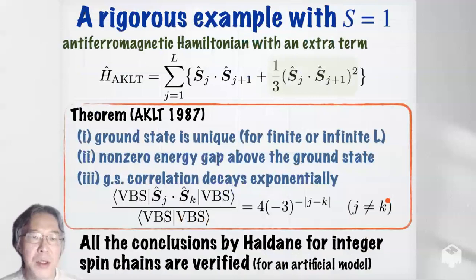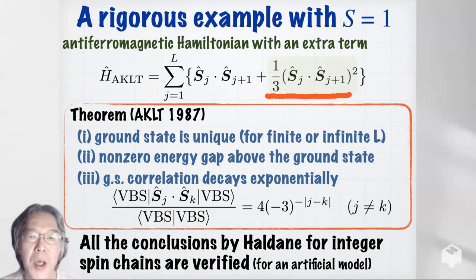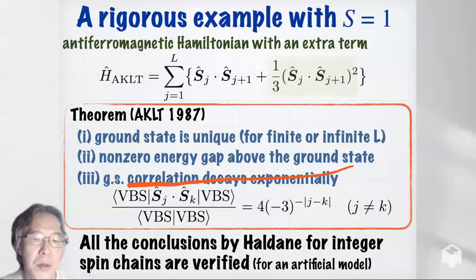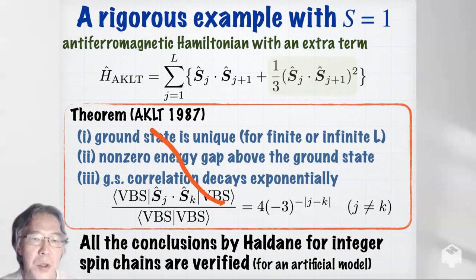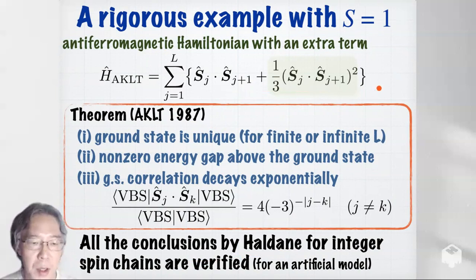One of such evidences is a rigorous example for the spin-1 chain: consider the antiferromagnetic Heisenberg Hamiltonian with an extra term. For this model, called the AKLT model, it was proved that the ground state is unique, there is a non-zero energy gap above the ground state energy, and the ground state correlation decays exponentially. So all the conclusions by Haldane for integer spin chains are verified rigorously for this related model.